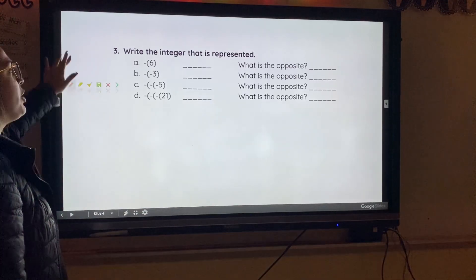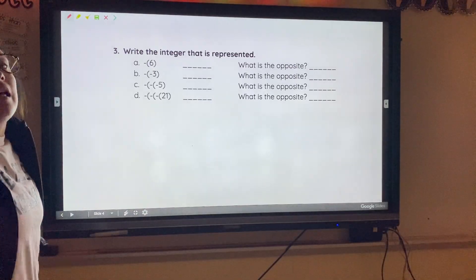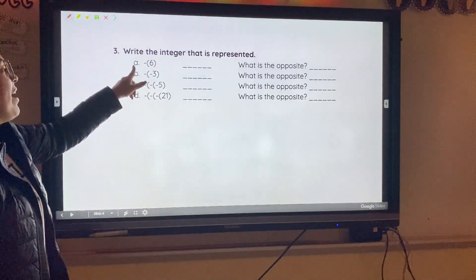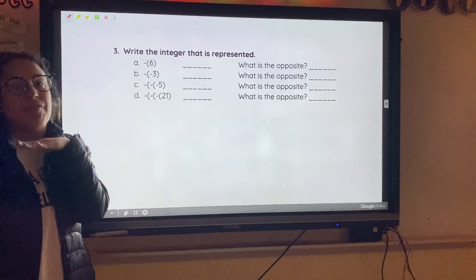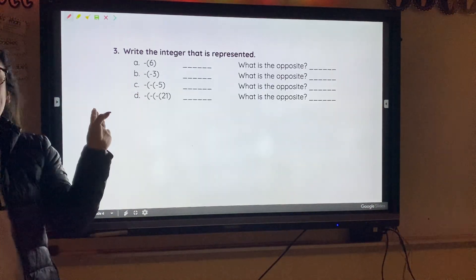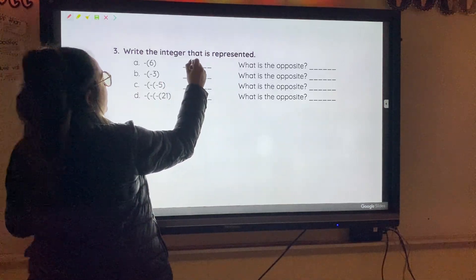We have this. It says, write the integer that is represented. This one's going to be a little tricky, just a little bit. Just make sure you pay attention. So we have A. It says negative and then 6 in parentheses. When it looks just like this, this just means negative 6.